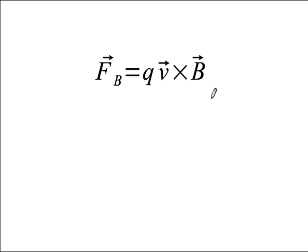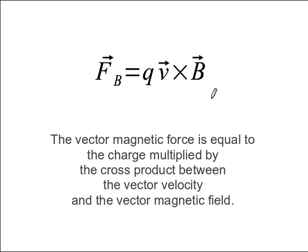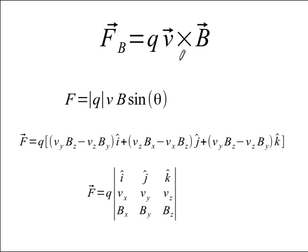If I was going to write this out in words as a quick reminder, the vector magnetic force is equal to the charge multiplied by the cross product between the vector velocity and the magnetic field. Remember that this cross product is not just a regular multiplication.